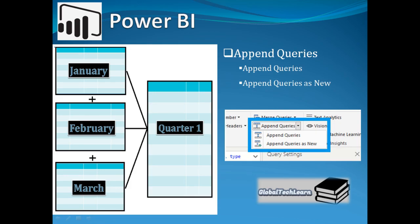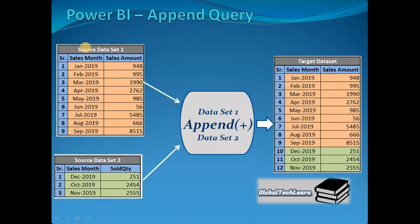Hello friends, welcome to our channel Global Tech Learn. To get data from multiple queries or sources into a single table, we use the append query option available in Power BI, which is similar to the union option available in SQL database to combine two tables.